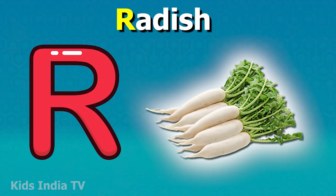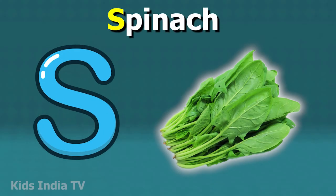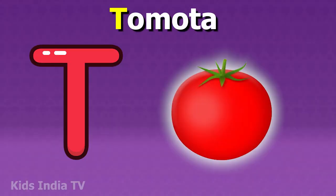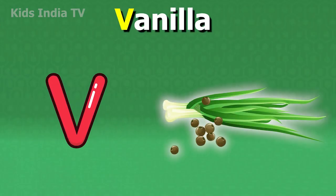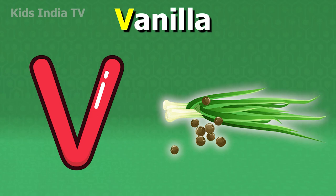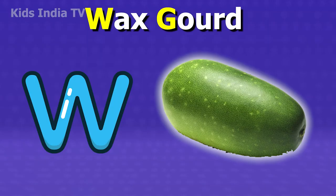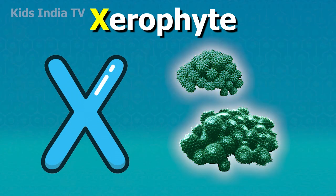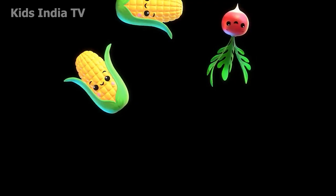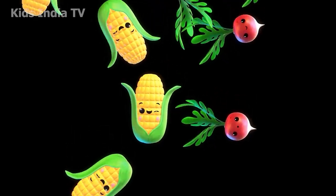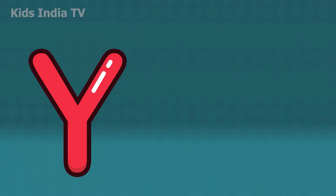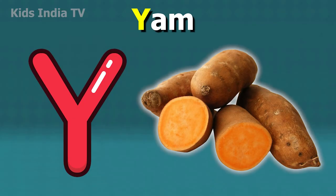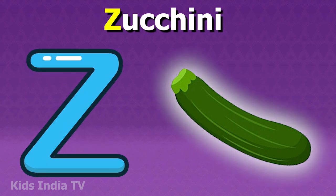R for Radish, S for Spinach, T for Tomato, U for Ulluco, V for Vanilla, W for Water Gourd, X for Ximenia, Y for Yam, Z for Zucchini.